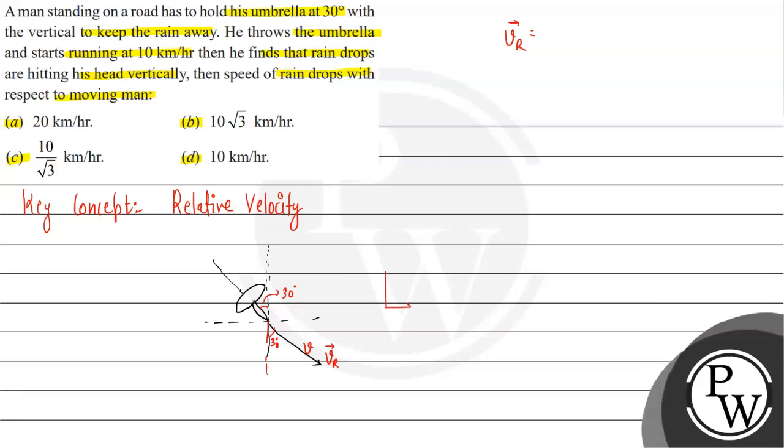This is the x-axis, this is the y-axis. This will be our V cos 30 component in this direction. This is V sin 30 in this direction.